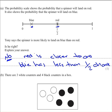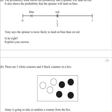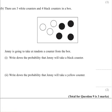And that's it, but you must give a reason. Looking down at B, it says there are 3 white counters and 4 black counters in a box. Jenny's going to take a random counter from the box.